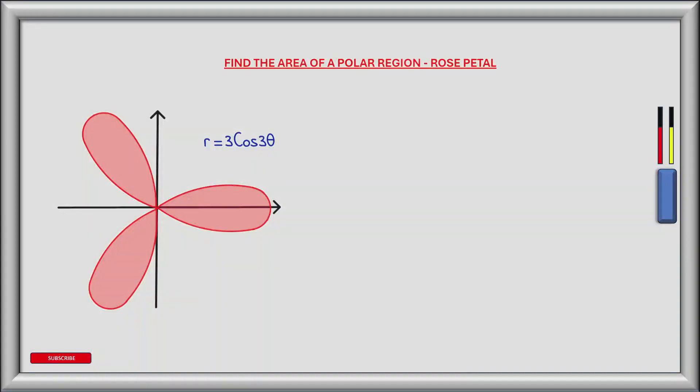Let's look at how we find the area of a polar region shaped like rose petals. To do this I've sketched the polar graph of r equals 3 cos 3 theta.